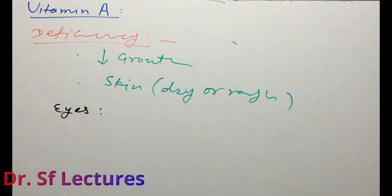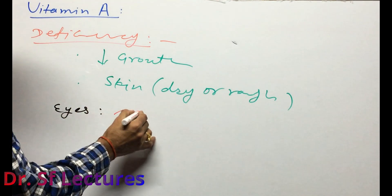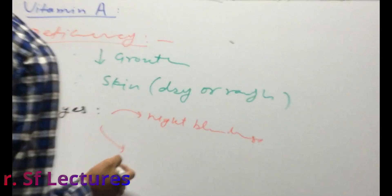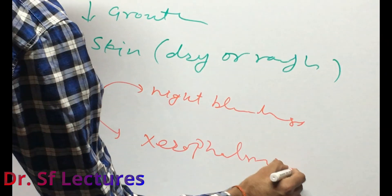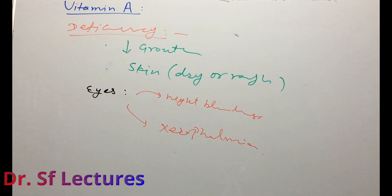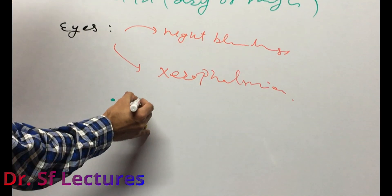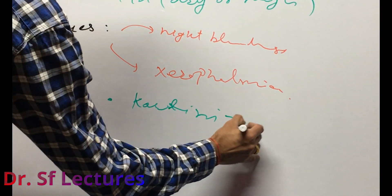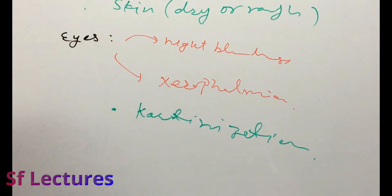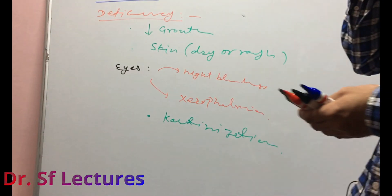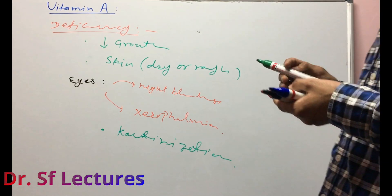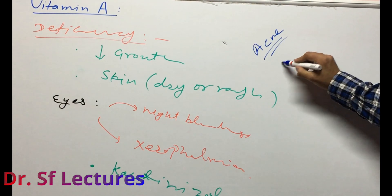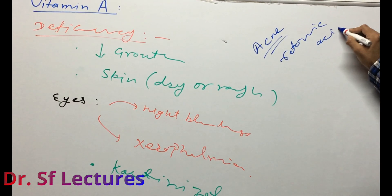In the eyes, there are two types of deficiency due to vitamin A: the first is night blindness, and the second is xerophthalmia. Another deficiency is keratinization. Since vitamin A is good for skin and growth, for acne in girls, retinoic acid can be used — which is studied further in dermatology.